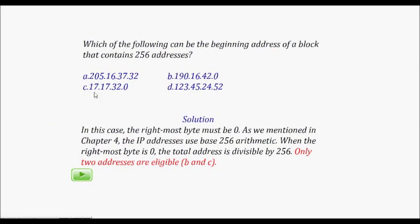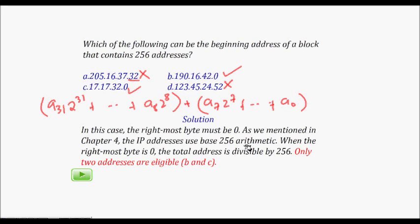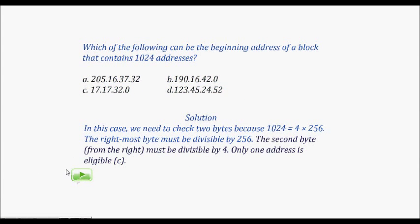For the next question: which can be the beginning address of a block containing 256 addresses? 256 is 2 to the power of 8, so we only need to check whether the last byte is divisible by 256. 32 is not divisible by 256. 0 is divisible by 256. So the answers are the options where the last byte is 0 — options B and C are correct.